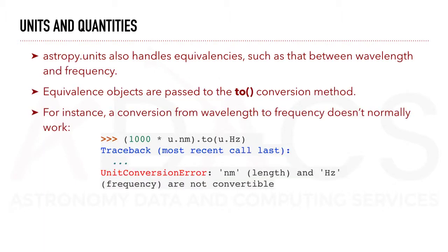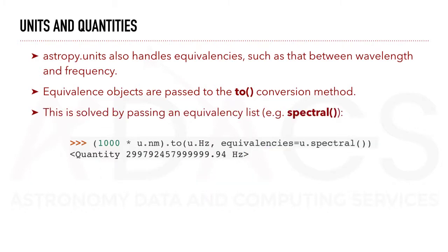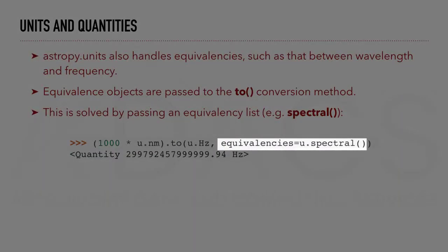AstroPy.units also handles equivalencies such as that between wavelength and frequency. Equivalence objects are passed to the to-conversion method. For instance, a conversion from wavelength to frequency doesn't normally work out of the box. This is solved by passing an equivalency list. For example, here, spectral.